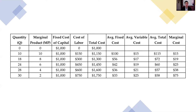Diminishing returns makes intuitive sense. Think of a coffee house with a set space, set number of machines, and set number of registers — even if you add more and more people, yes you'll increase productivity at first, but by five, six, or seven people they're just going to get in each other's way. That's another way of thinking about diminishing returns.